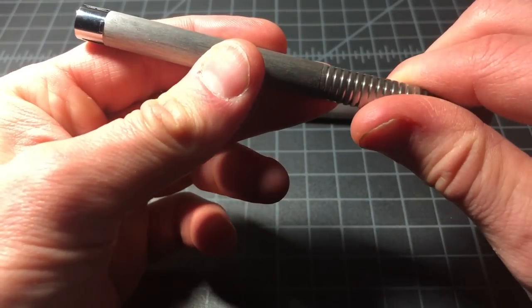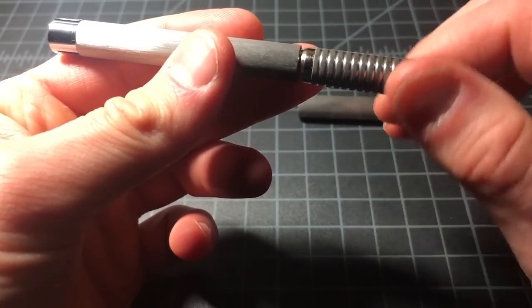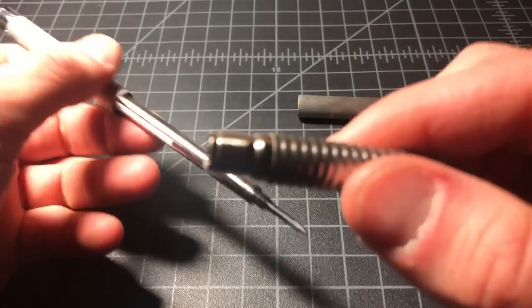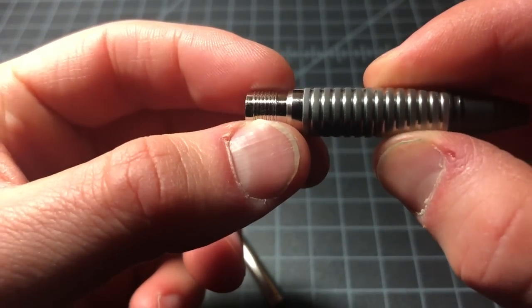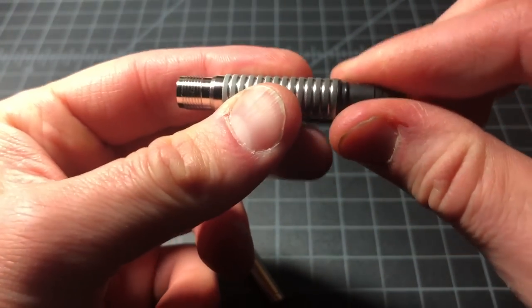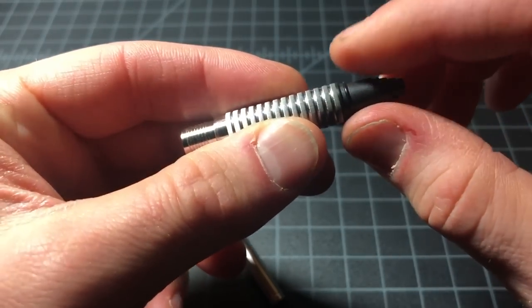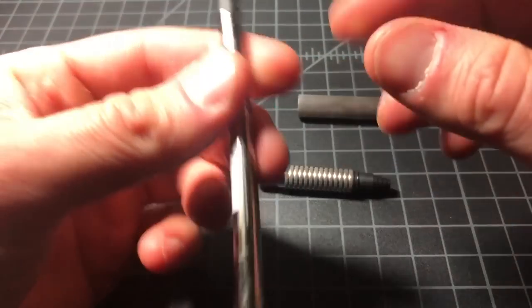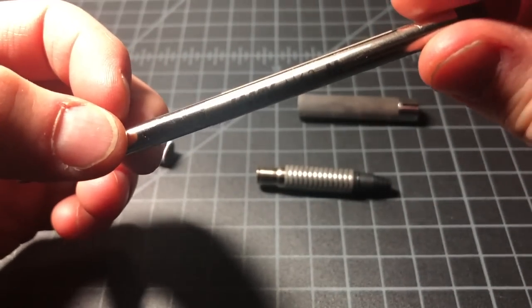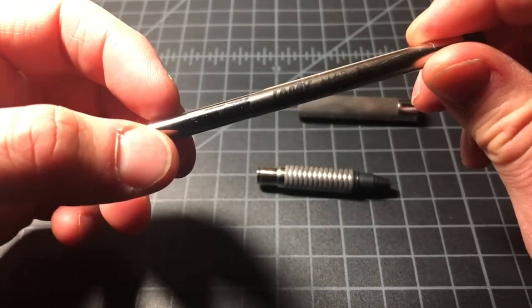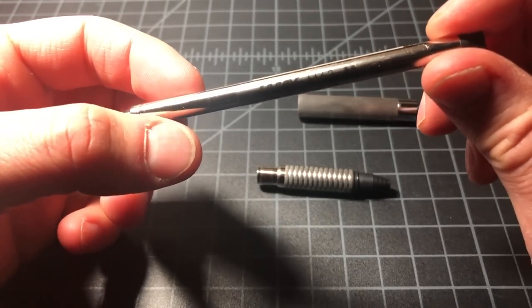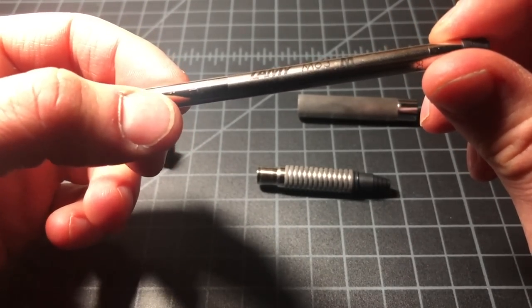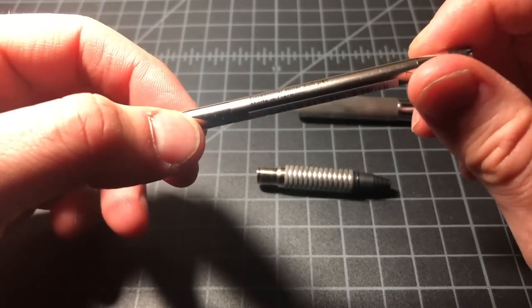Looking at the pen more closely, we can see it comes apart. You just twist it here. And then we have a metal screw part there. So that's nice. The front piece does not come off. And then inside we see a Lamy M63 rollerball refill. The M63 is just the capped version of the rollerball refill. The capless version is the M66.